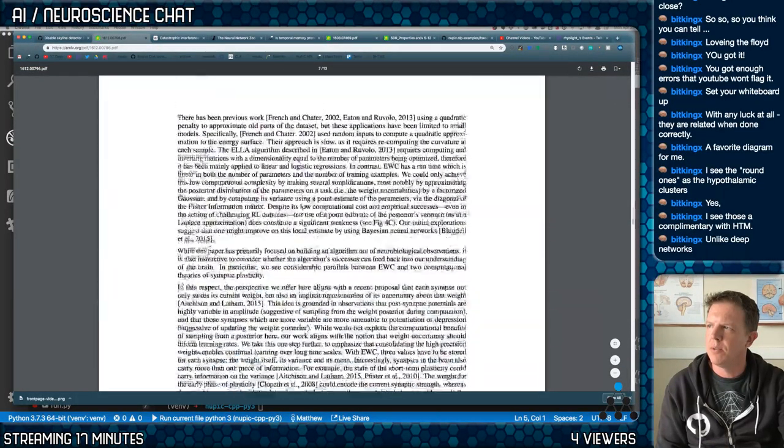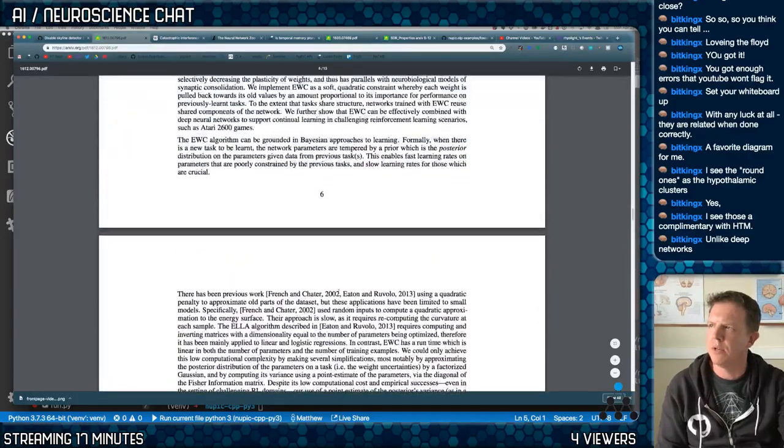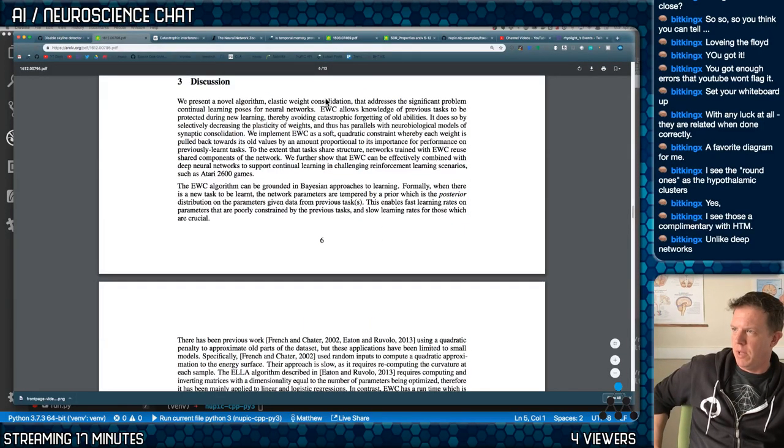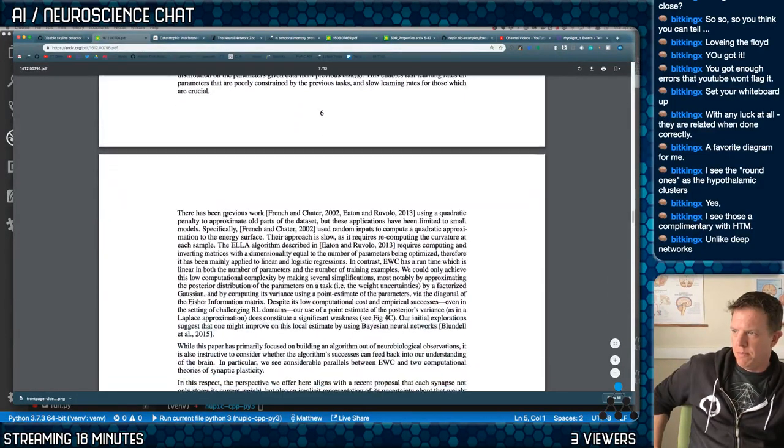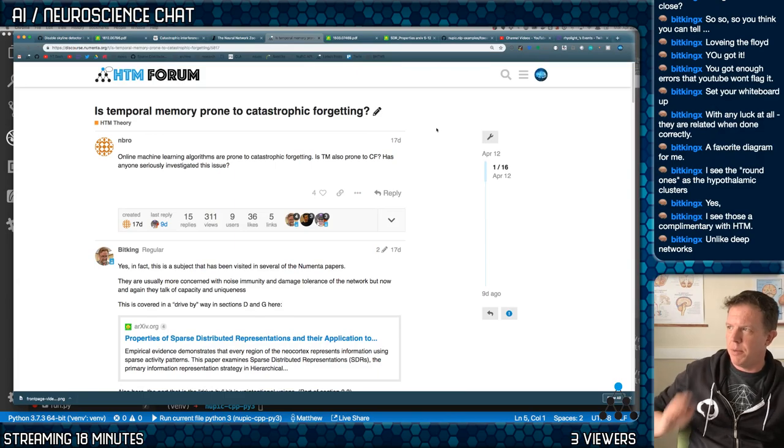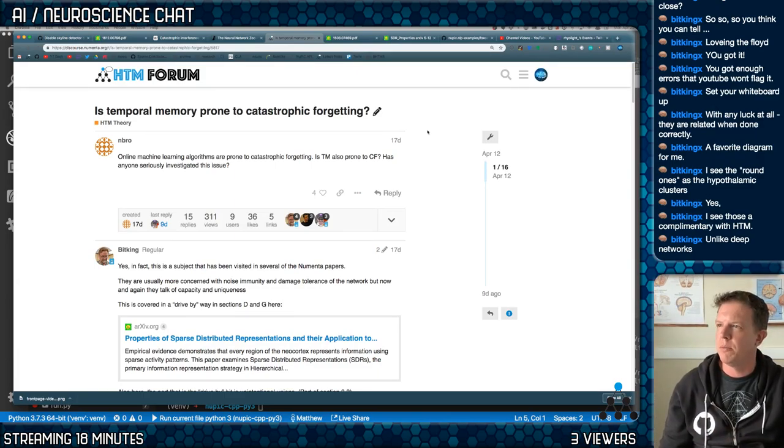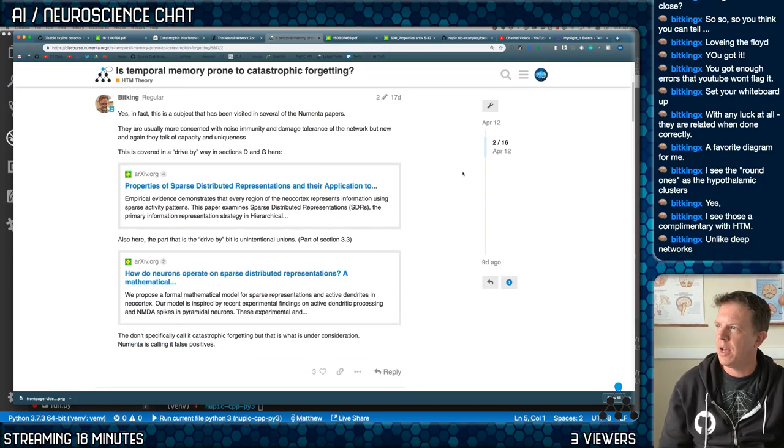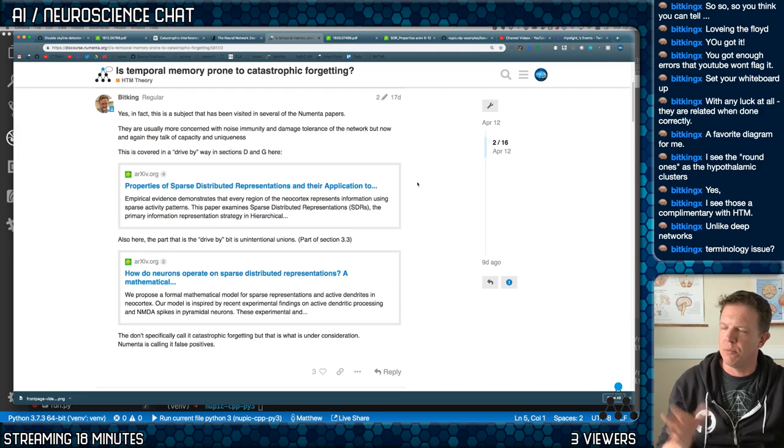And this is probably the major paper you should read if you want to learn about that. So basically this paper is a novel algorithm to address that problem specifically in deep learning networks. So now let's talk about HTM and catastrophic forgetting because this question came up on the forum 17 days ago. And someone asked, is temporal memory prone to catastrophic forgetting? So that's a good question. The short answer is that there's no, it's not.